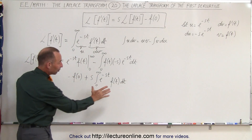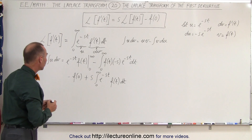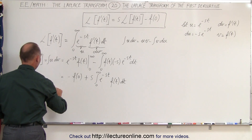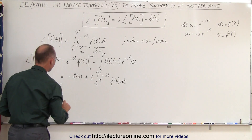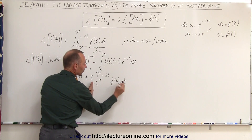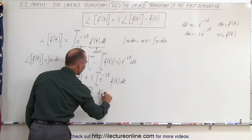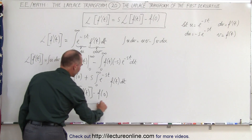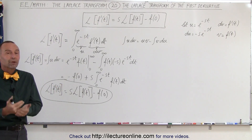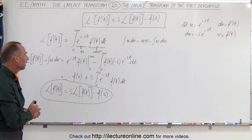Notice that this integral is simply the Laplace transform of f of t, so we can write that the Laplace transform of the first derivative of f of t equals s times the Laplace transform of f of t, minus f of zero. And notice this is exactly the same equation we stated at the beginning. That's how we derived this formula, simply by using integration by parts.